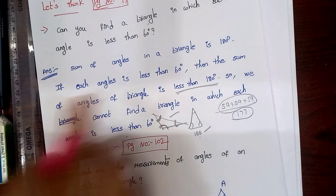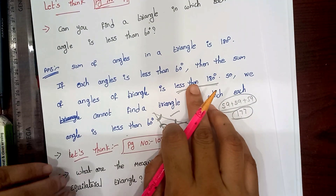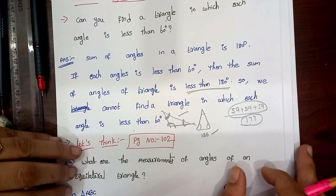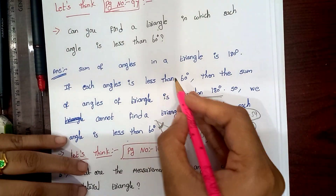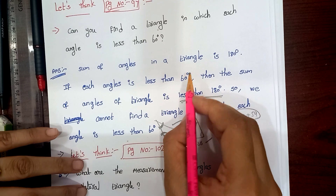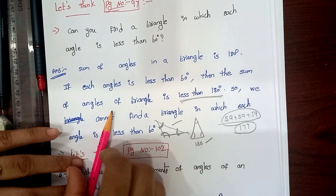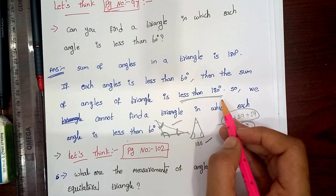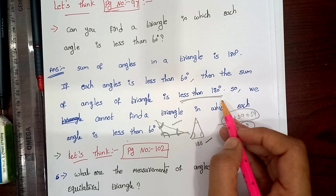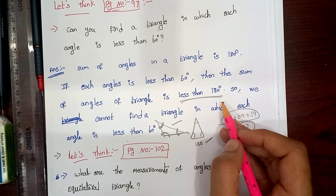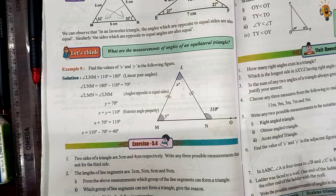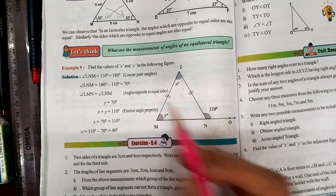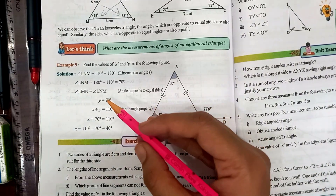So if the angle is below 60 for all three, we cannot form a triangle. The triangle must have 60 degrees or above for at least one angle.